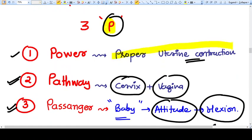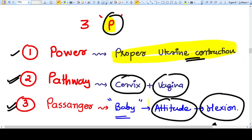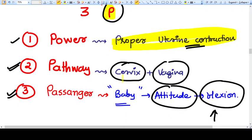Uterine contractions are the primary thing to start labor. The second thing is pathway, and the pathway consists of cervix, vagina, and the bony outlet.